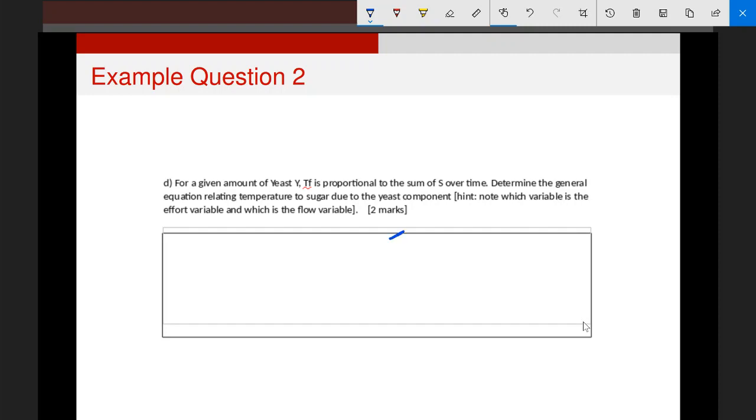So writing that generally, we'd have the fermentation temperature as proportional to the sum S over time. That's the same as saying the integral of S over time. So that's an integral symbol, and this dt means over time.